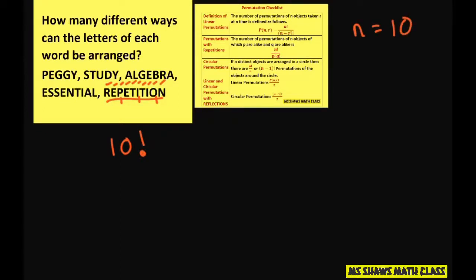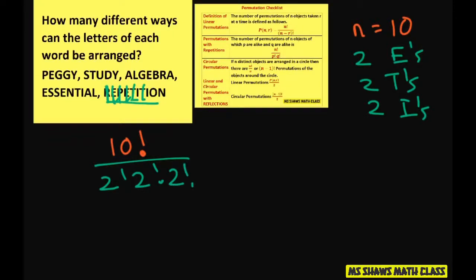Now let's see. How many R's? Just one R. How many E's? We have two E's. So two E's. It's going to be two factorial. How many P's? Just one. How many T's? Two T's. That's two factorial. How many I's? Two I's. So that's another two factorial. And then we just have one each of those.